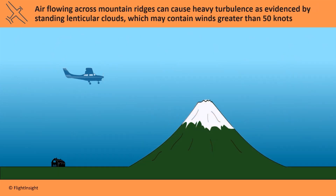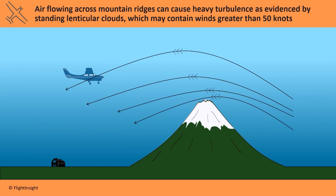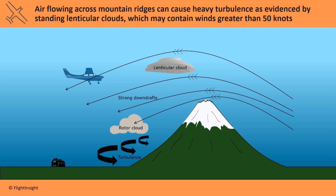Turbulence is the result of different air masses clashing together and forming wakes in the air. The presence of mountain peaks and ridges can produce its own type of turbulence called mountain wave. Air flowing across ridges is forced downwards and the pressure drop forms an almond or lens shaped cloud called a lenticular cloud, which appears stationary but can contain winds of 50 knots or more. Rotor clouds can also form lower down the ridge and contain heavy turbulence as well.